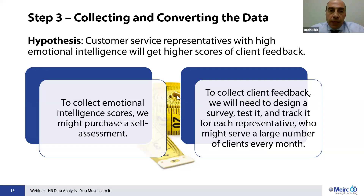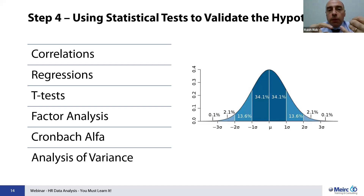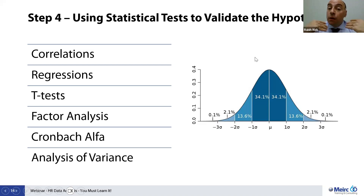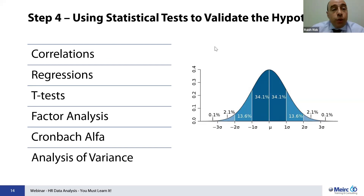Step four is utilizing statistical tests beyond what most HR analysts do today. Most currently use bar graphs, pie charts, averages, means, standard deviation, and trends — that's descriptive statistics, which is good but not enough. It will not allow us to predict the future or connect the dots. To connect the dots and validate hypotheses, we require a different set of statistical tools that I'd like to share.